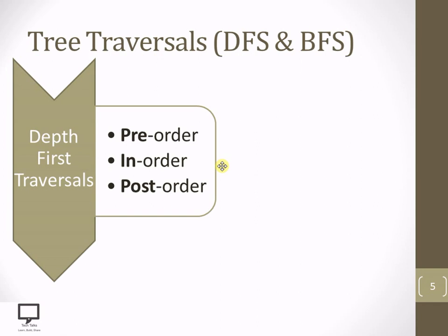There are three sub-types or techniques with which we can traverse the tree using DFS: pre-order, in-order, and post-order traversals. These three types are based on the position of the root node. Pre-order is where the root node is located before the left and right child. In-order means the root node is located between the left and right child. Post-order is where the root node is located after the left and right child.